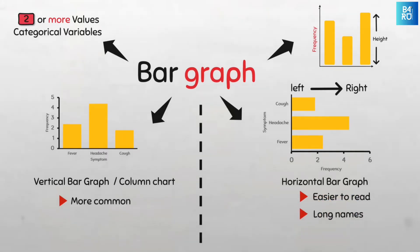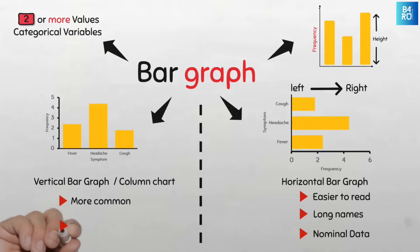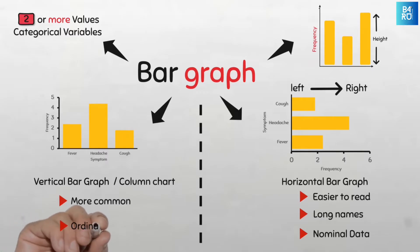The long axis labels are usually the case when you have nominal data. Vertical bar graphs, on the other hand, are used when you have ordinal data.